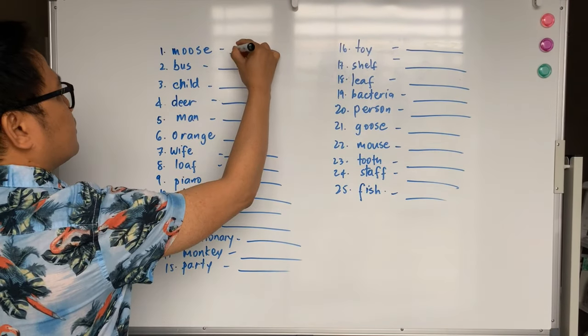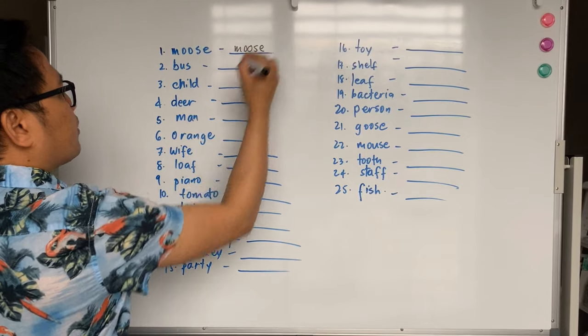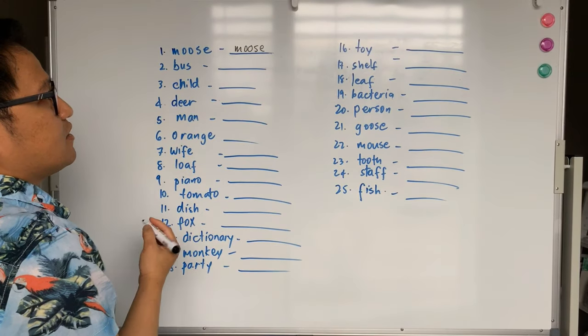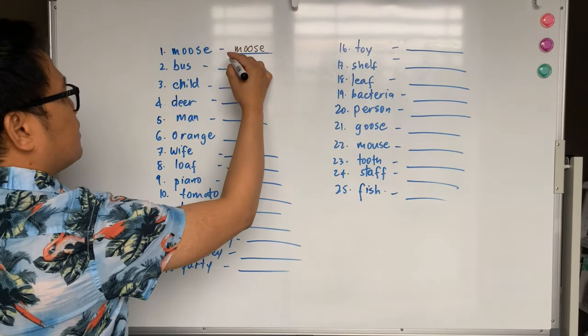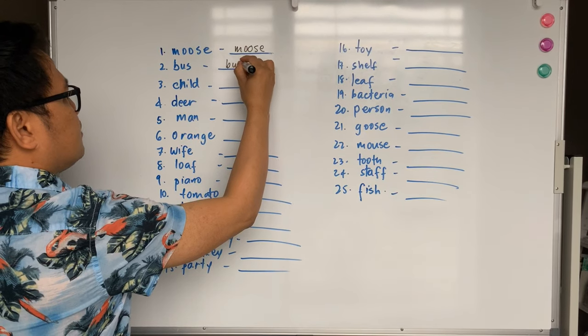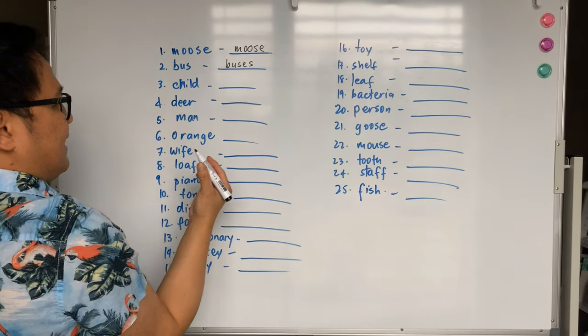Number one, the plural form of moose is the same, moose. While boss, you just need to add ES.